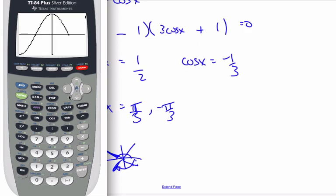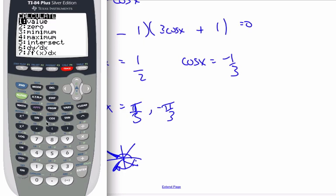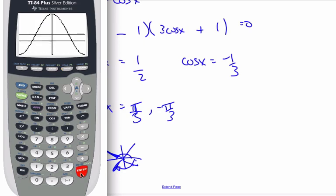And I graph it. Here's my cosine curve coming. And these will be my negative 1 third. So I'm going to find the intersection.